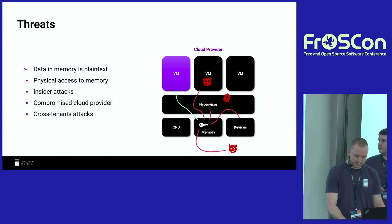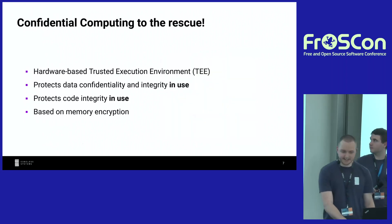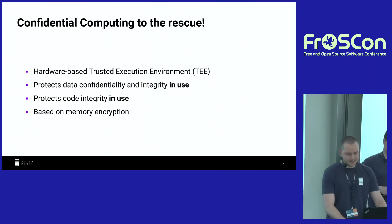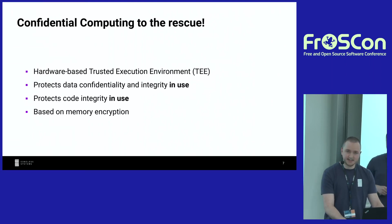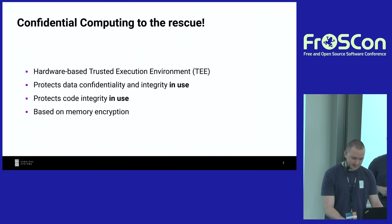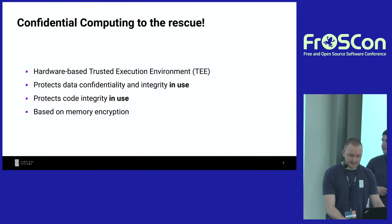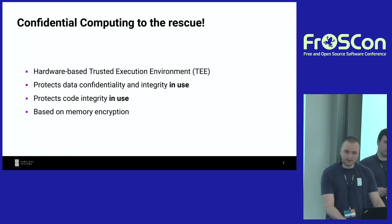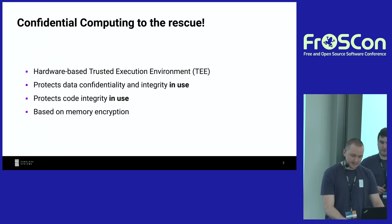So what are we going to do about this? Confidential computing to the rescue. Confidential computing uses hardware-based trusted execution environments to protect data confidentiality and data integrity in use. It also protects code integrity in use. We have strong isolation between different execution contexts, and this is often based on memory encryption. Let's take a deeper look into one example of confidential computing hardware and see how this protection works.